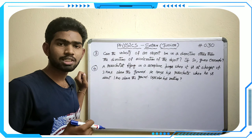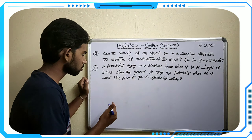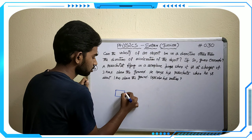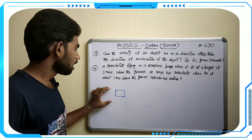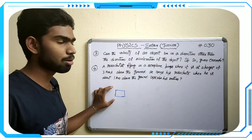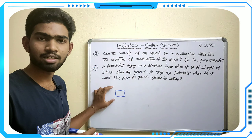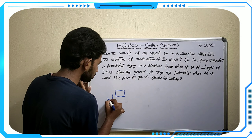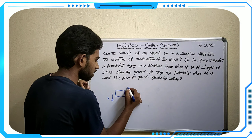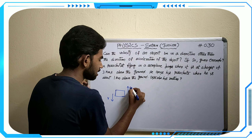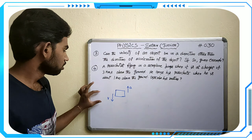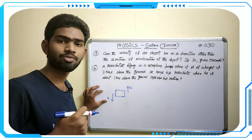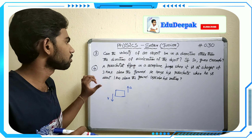Think of an object where velocity is downward and acceleration is upward — so they are in opposite directions. Is it possible for an object to have velocity and acceleration on opposite sides?